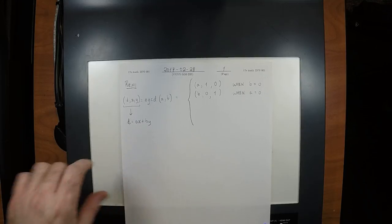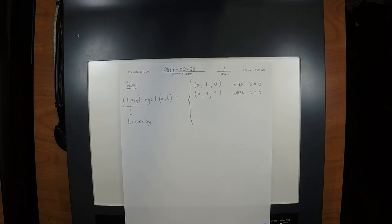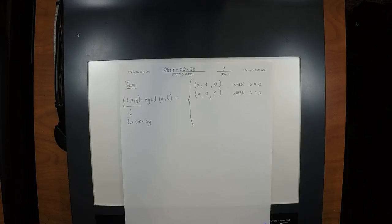Those are the base cases. How do you handle the recursive case? The general idea is that you recurse to a smaller case. It returns to you the GCD and Bezout coefficients corresponding to the smaller case. You keep that same GCD — because the GCD is the same — but you have to turn the Bezout coefficients for the smaller case into the Bezout coefficients for your case.